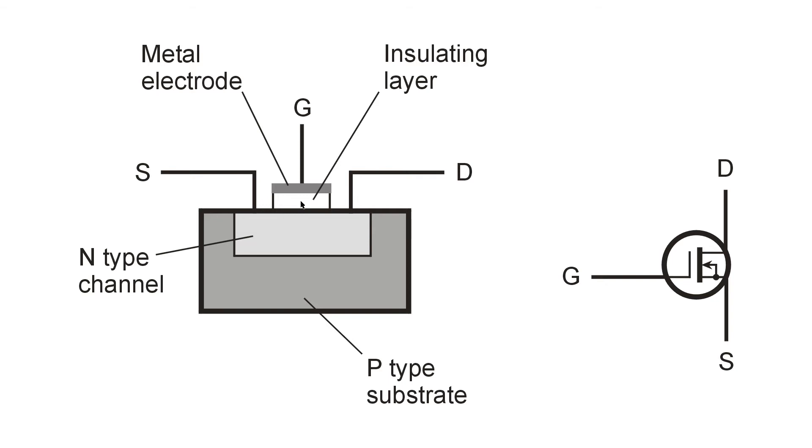But the outstanding property of this device, either N-channel as shown here, or P-channel, in which the arrow here would just be reversed and this would be P-type and this would be an N-type substrate. The difference between this and an ordinary junction field effect transistor is that this insulating layer causes the input impedance of the device between the gate and the source to be extremely high.